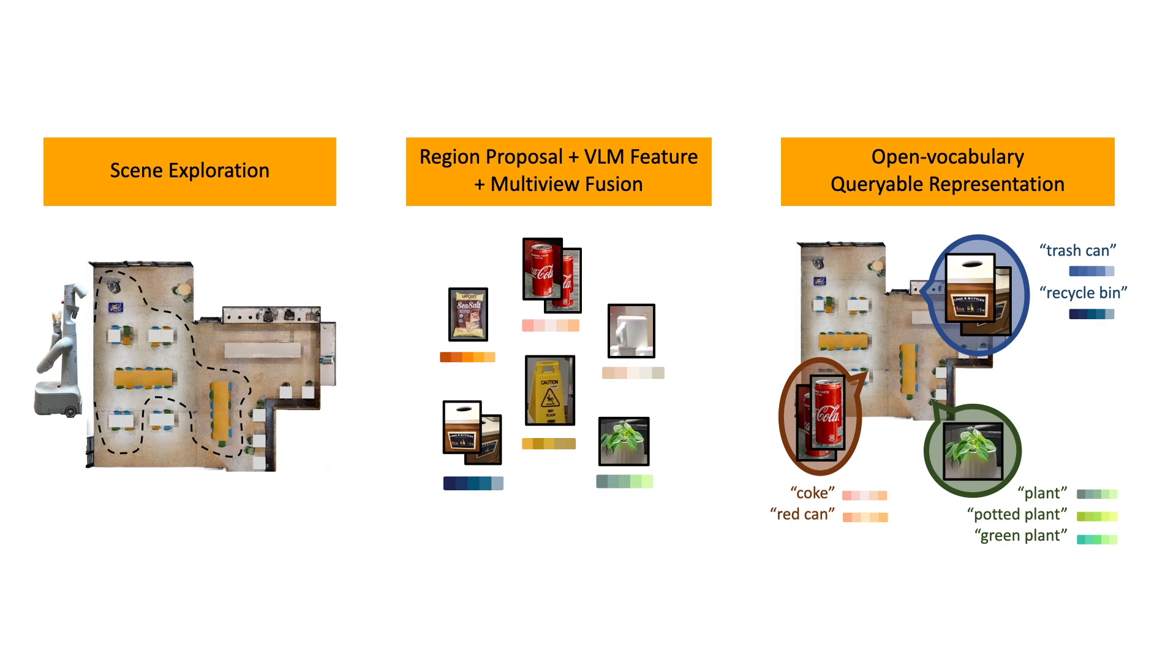We first let the robot explore the scene and gather observations. A class agnostic region proposal network proposes regions of interest and encodes them into visual language model embeddings. The embeddings and object bounding boxes are aggregated by a multi-view fusion algorithm to create a representation that will be later queried with natural language inputs.